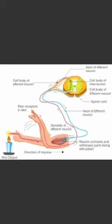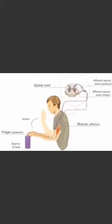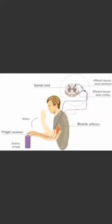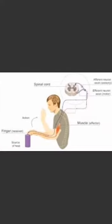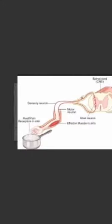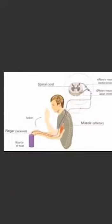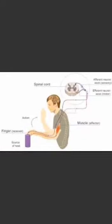How does it occur? When we touch a very hot pan, the stimulus — that is, the heat — is sensed by a receptor called a heat receptor, or thermoregulator, in our hand. This stimulus in turn triggers an impulse in the sensory neuron in our body.